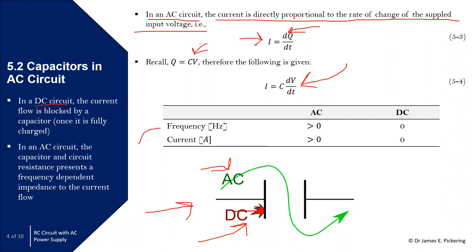Looking at this table: for AC, the frequency is greater than zero; for DC, there's no frequency — it's just a continuous value. For current passing through the capacitor: with AC (frequency greater than zero), current can pass through; with DC, no current can pass through the two plates.